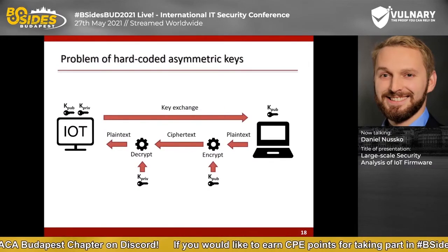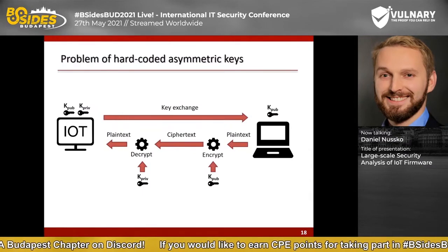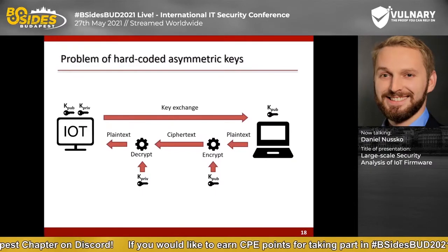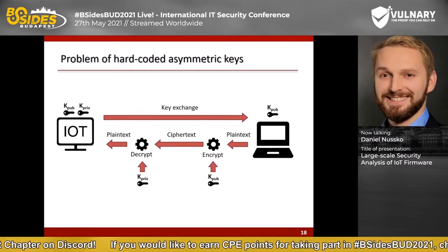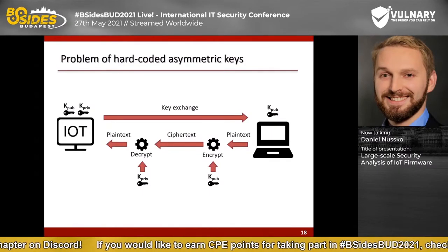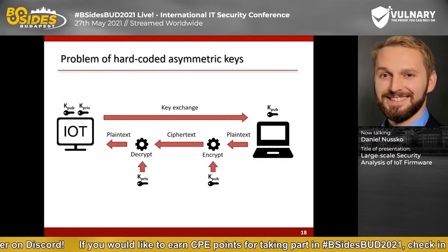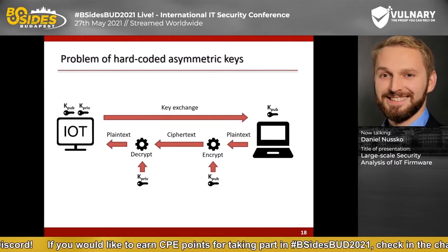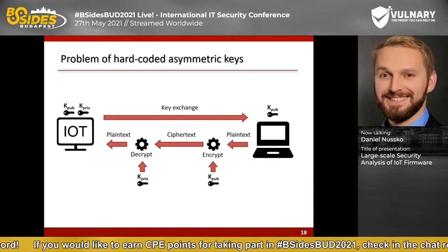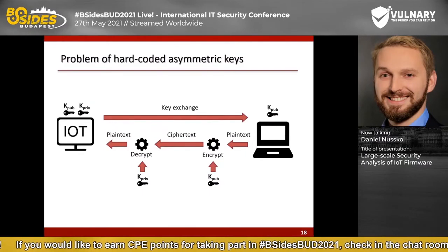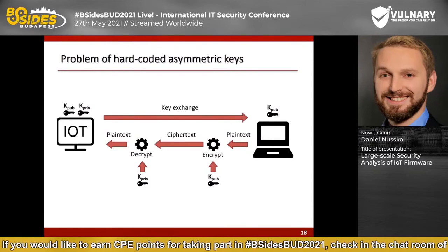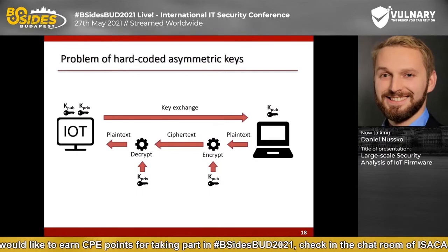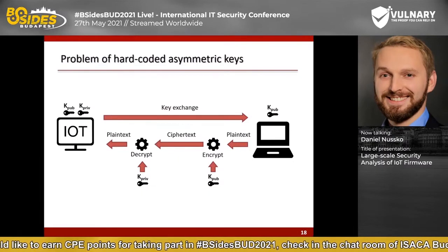What's the problem with hardcoded keys? Asymmetric encryption works by generating an individual pair of keys — a private key kept secret on the device and a public key provided to clients. A client can encrypt a message using the public key, but only the owner of the private key can decrypt it. In the case of a hardcoded certificate, all devices with that firmware use the same public and private key. For example, if the device uses these keys for HTTPS communication to the web interface, an attacker could easily decrypt TLS traffic by extracting the private key from the firmware — which is publicly available on the internet.